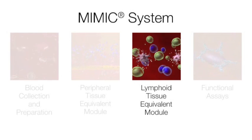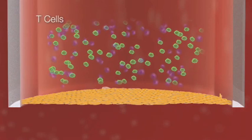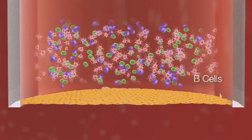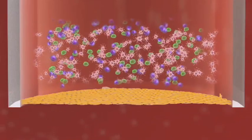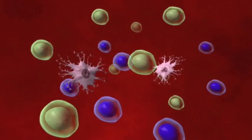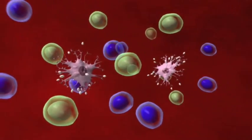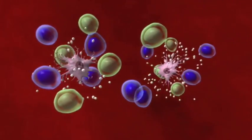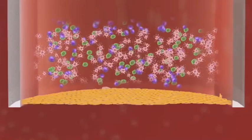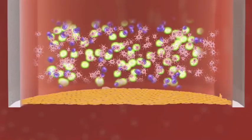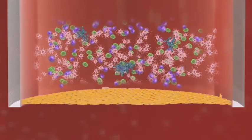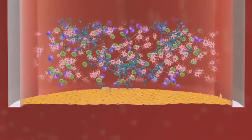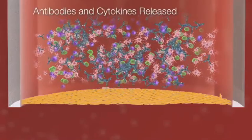The lymphoid tissue equivalent module is a co-culture of T cells, B cells, and follicular dendritic cells that simulates a lymph node to initiate adaptive immune responses. When the dendritic cells present their antigen to the right receptor-matched T cells, a chain reaction occurs. The antigen activates T cells, which can then activate B cells. These B cells can then differentiate to plasma cells, generating antibodies and other cytokines.